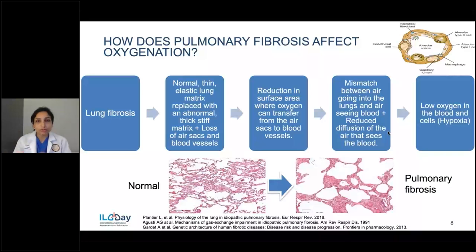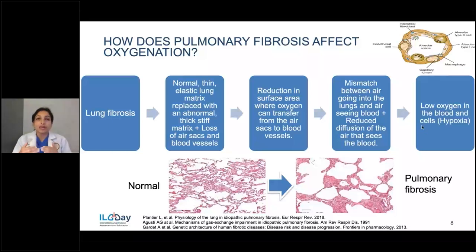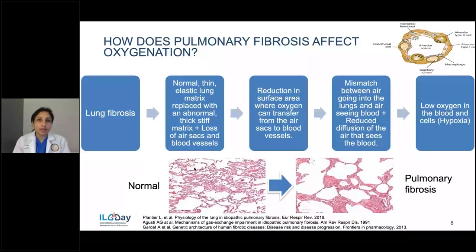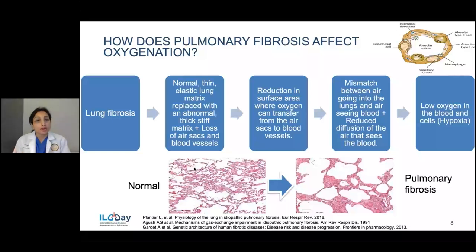There will still be some normal tissue, and in those areas, certain mechanisms activate so more oxygen can get into the blood. But as the process gets worse and worse, you may exhaust that compensation, and ultimately not enough oxygen reaches the blood. When not enough oxygen reaches the blood, that's what we call a low oxygen state — also called hypoxia. As the cells downstream see less and less oxygen, the process of having low oxygen inside the cell is called tissue hypoxia.